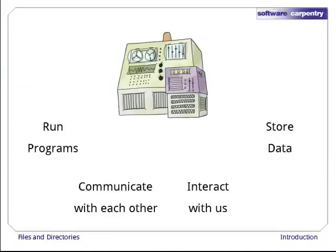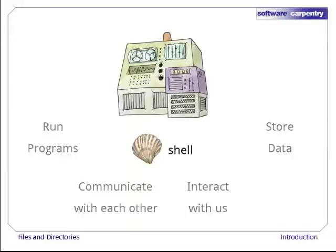As we said in the last episode, a computer has four main jobs: run programs, store data, communicate with other computers, and interact with us. One way the computer can interact with us is through a command shell. We type commands, the shell tells the computer to run programs on our behalf, and then the shell shows us the output from those programs.